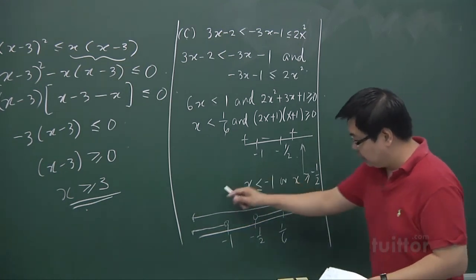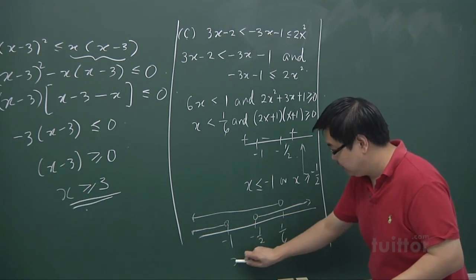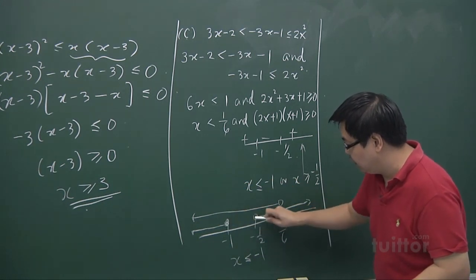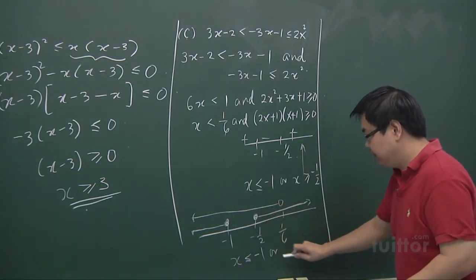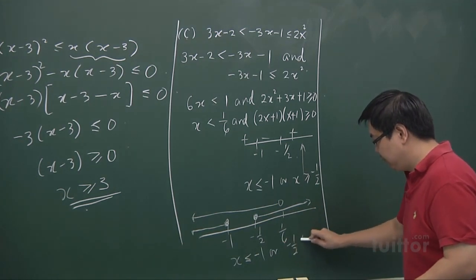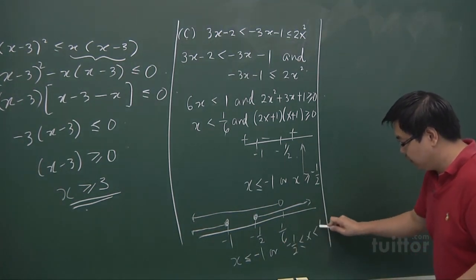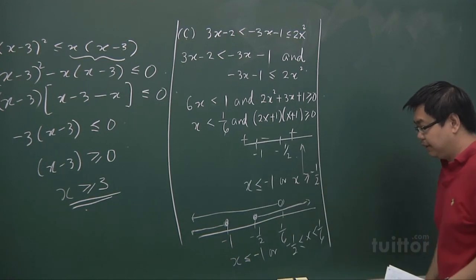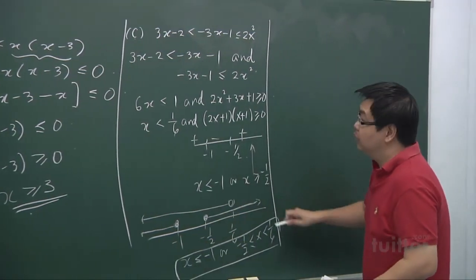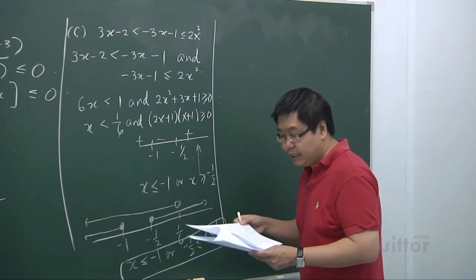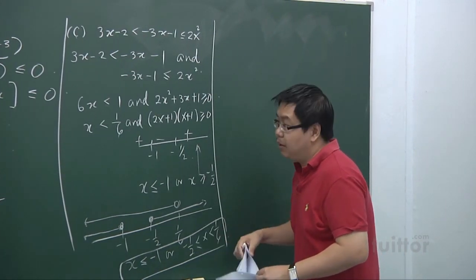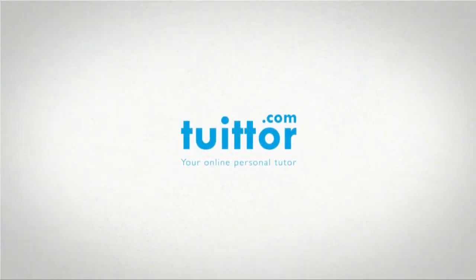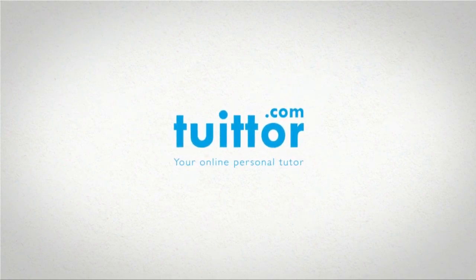Putting them together, the solution is x ≤ −1, or −1/2 ≤ x < 1/6. The point −1 is a closed circle (included), −1/2 is a closed circle, and 1/6 is an open circle (not included). I hope these three examples give you an idea of how to solve inequality problems using the number line. Thank you.